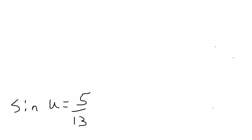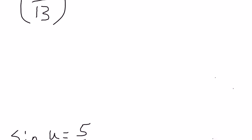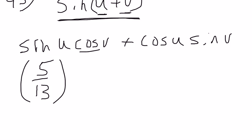So we're going to substitute that in for sine of u here. They also give us the cosine of v. They tell us that the cosine of v is negative three-fifths. So we're going to substitute that in for cosine right here.